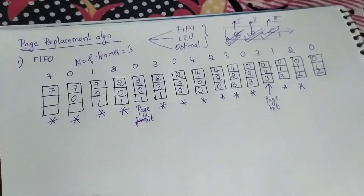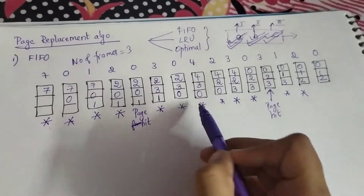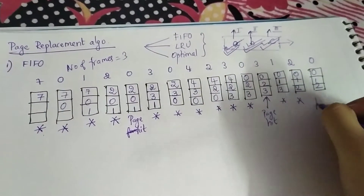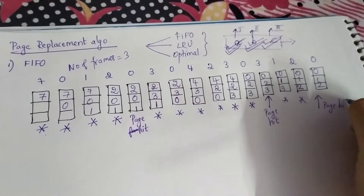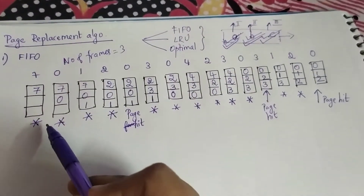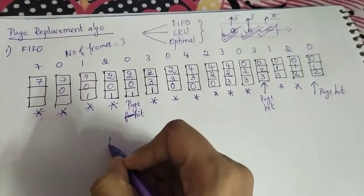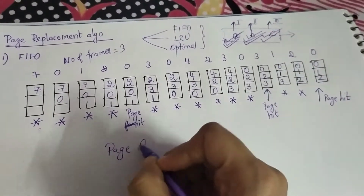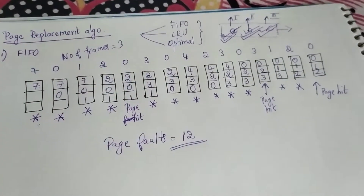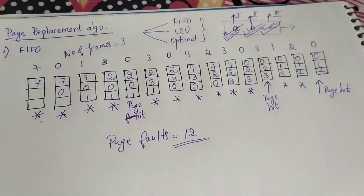Now you have zero, so you repeat the same process. Now count the number of page faults: one, two, three, four, five, six, seven, eight, nine, ten, eleven, twelve — and there was one page hit. So the total number of page faults using FIFO is twelve. This is the final solution. Thanks for watching this video — please subscribe to the channel for further videos.